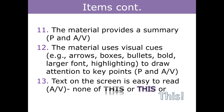Item twelve: the material uses visual cues. Are they doing arrows, boxes, bullets, bolding? What are they doing to get people's eyes to look at the important information? For AV, this also relates to whether there are slides or pop-up boxes in the video. Item thirteen: text on screen is easy to read. We want things that draw visual cues but do not present challenges to people who might have visual impairments — interesting, eye-catching, and still understandable.